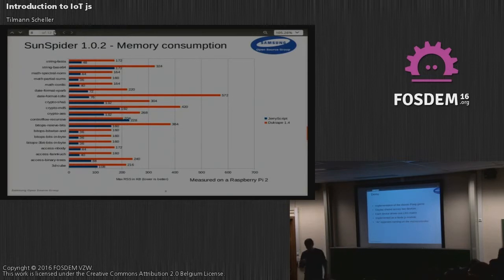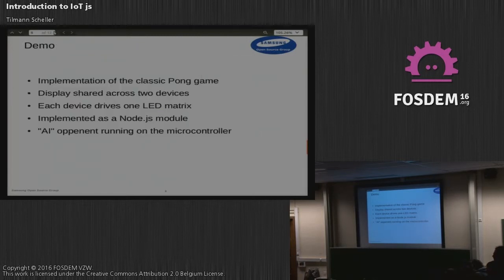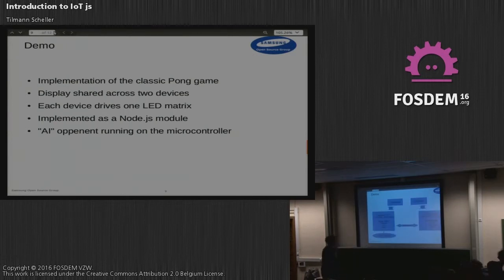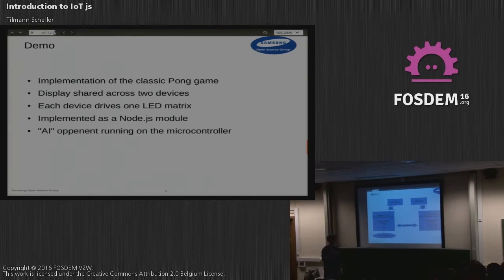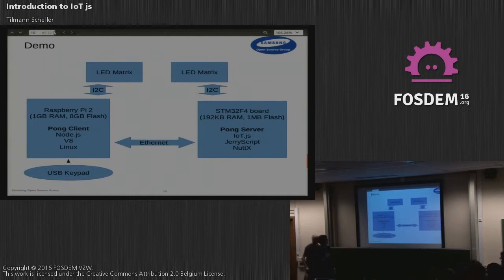For the demo, we've made a reimplementation of the classic Pong game. To make it more interesting, this is not just running on a single device — it's running on two devices with a single screen, where each device controls one half. The ball essentially passes between the two devices over a network connection. We implemented a simple client-server system for Pong: the client runs on a Raspberry Pi with a USB keypad connected to control it, and the computer opponent runs on the microcontroller. All of it is implemented in JavaScript — both devices are running JavaScript with no Node.js modules.